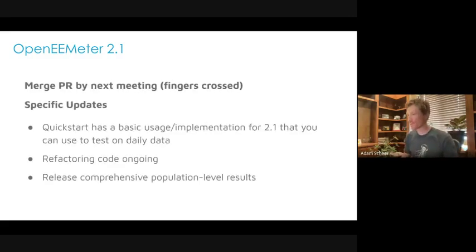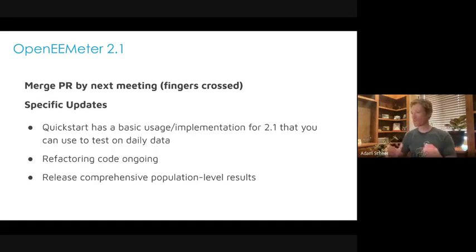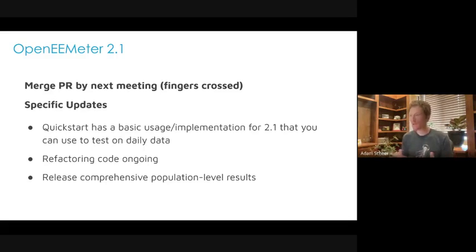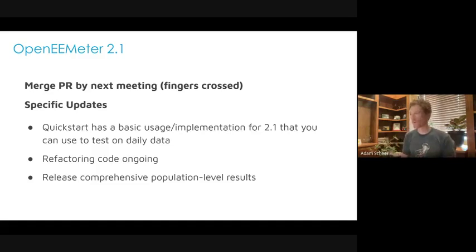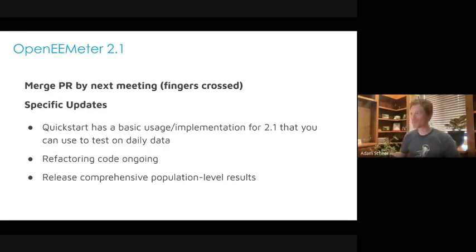What's happening with 2.1 right now: we put all this work into the daily model, got a lot of great feedback from the group, and iterated to a final solution. We're at the point now where we're hopeful that by the next meeting we will actually merge the pull request for 2.1 and make it fully available to everybody. We'll also be releasing comprehensive R&D results to back up the decisions made in the final formulation of the model.